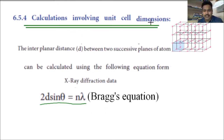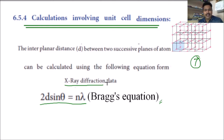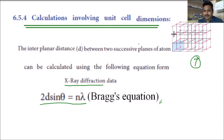This equation is used to calculate unit cell dimensions — specifically edge lengths. We have seven crystal systems, and for any crystal system, if you want to find the dimensions, we use this equation in the process of x-ray diffraction. X-ray diffraction uses x-rays to find the structure of a unit cell. The main purpose of Bragg's equation is to find the interplanar distance between two planes.